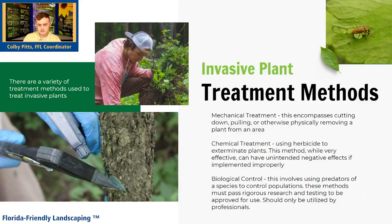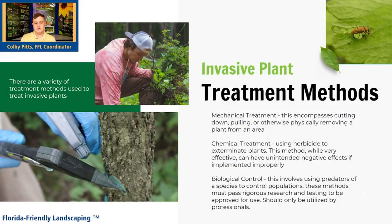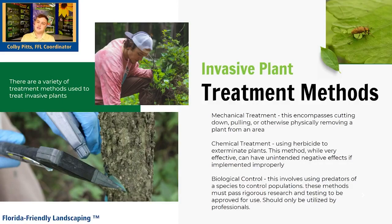This brings us to treatment methods — what you can do. Here in Hernando County, common things we see are pepper trees on your property, or Cogon grass. We have a few different methods to take care of invasive plant species. The first is mechanical treatment, which is pulling weeds — physically removing it from the area. That sometimes works, but it's normally really labor intensive, and if you have a big infestation it's not really optimal.